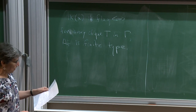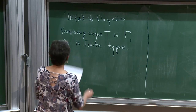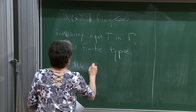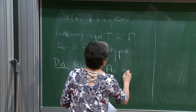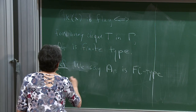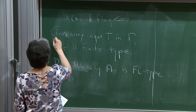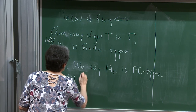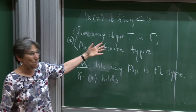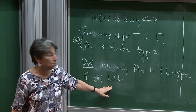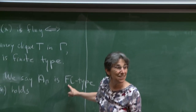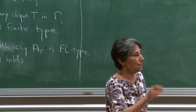Let me introduce the terminology. We say A(γ) is of FC type if this condition holds — if every clique satisfies condition star: every clique T in γ has A_T finite type. Sometimes this holds and sometimes it doesn't. Why FC? FC stands for 'flag complex' — it's exactly what we need to guarantee the links are flag complexes.